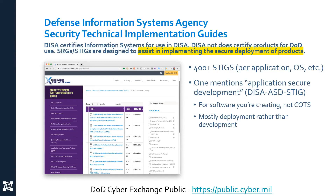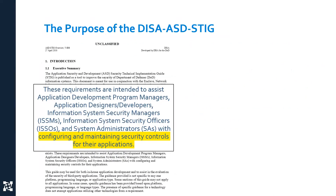Even though it says 'development' in the name, the STIG is less focused on development than it is on deployment. When you download the STIG, there's a readme with an intro. For those on the development side, STIGs can seem a little alien. The executive summary notes that the point of this is to help people configure and maintain security controls for their application. As a developer, if you feel like this isn't giving you guidance to improve your secure coding practice — you are correct, but it's hidden in there.